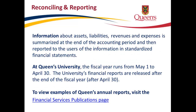Information about assets, liabilities, revenues, and expenses is summarized at the end of the accounting period and reported to users in standardized financial statements. At Queen's University, the fiscal year runs from May 1st to April 30th. The university's financial reports are released after the end of the fiscal year, after April 30th. To view examples of Queen's annual reports, visit the Financial Services Publications page.